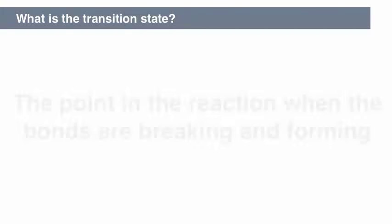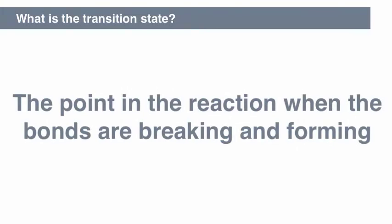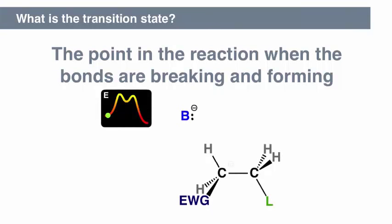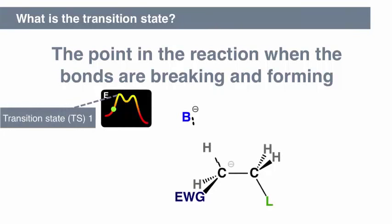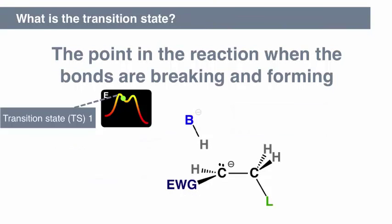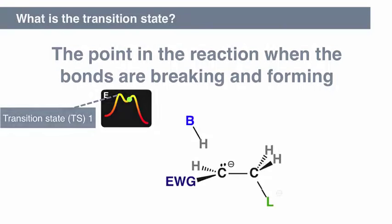The transition state is the point in the reaction when the bonds are breaking and forming. The transition state corresponds to the highest energy point between starting materials and products of a given step. Bonds can be more or less fully formed, and the extent of bond formation and breakage depends on the energy profile of the reaction.